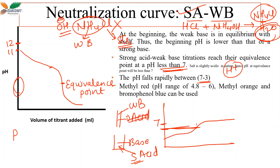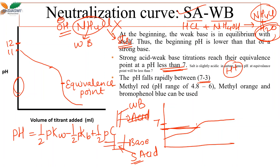Theoretically, the pH at the equivalence point for strong acid–weak base titration can also be calculated using a formula: ½(pKw + pC − pKb), where C is the concentration of the salt, Kb is the dissociation constant of the base, and Kw is the ion product of water.